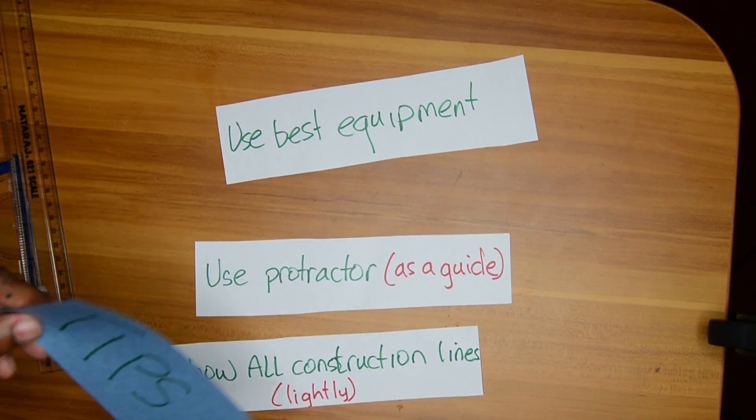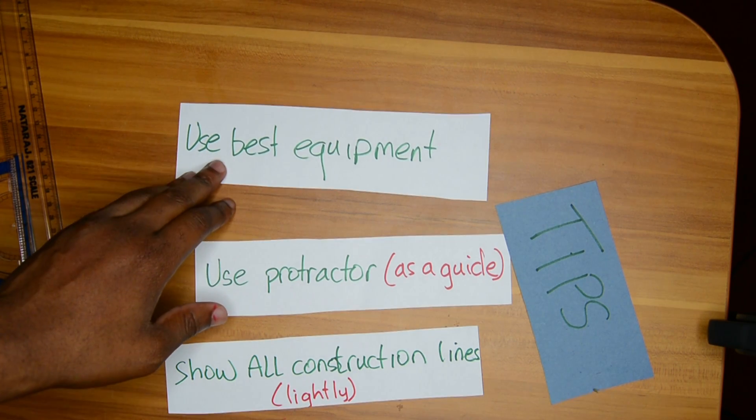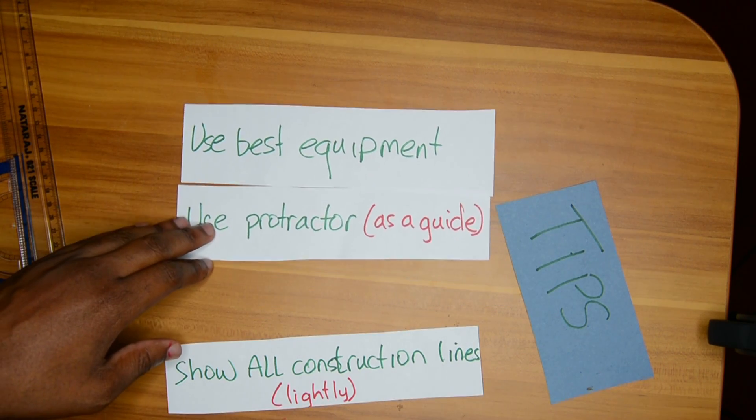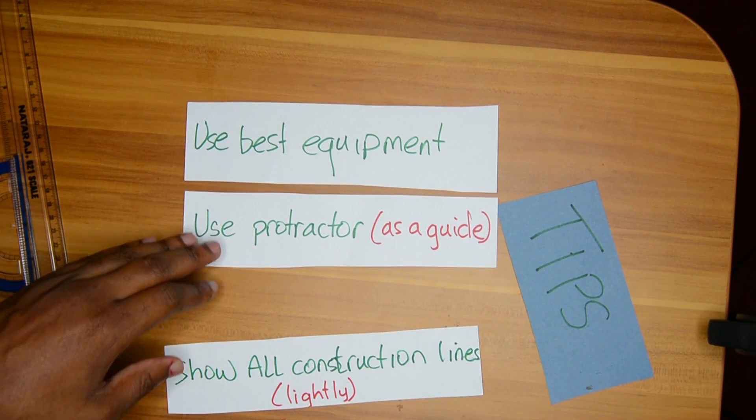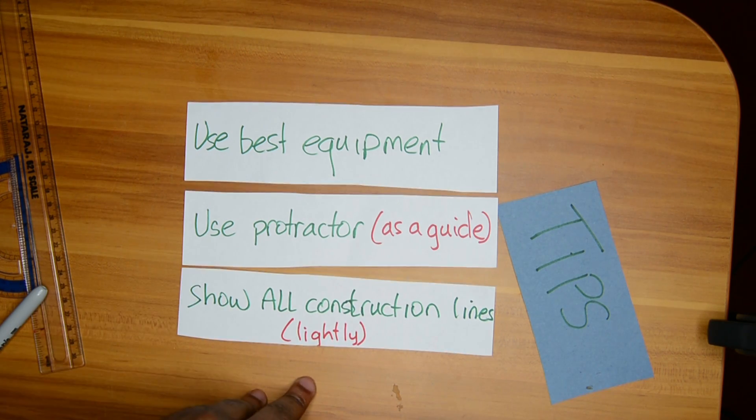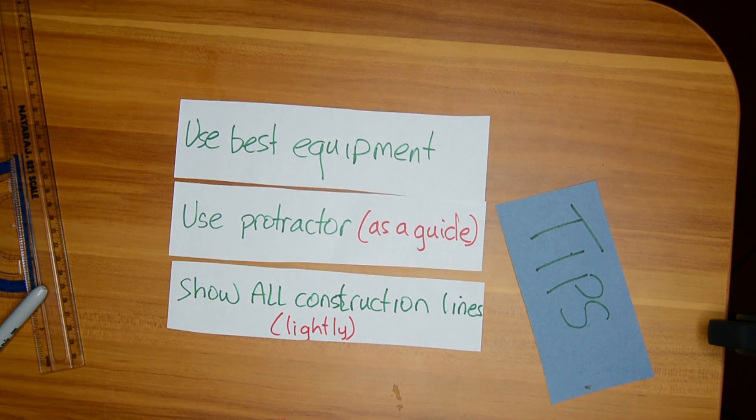All right, so that's it for today's video. Remember these tips: use the best equipment. I forgot to include you need a good eraser, so you want to use a good eraser when you're doing this question. Use a protractor as a guide throughout the question. Show all construction lines and let your construction lines be light. So look out for the next video on this topic where I actually do questions, and I'll try and do a good few construction questions so that you can see how to put all the techniques into action.